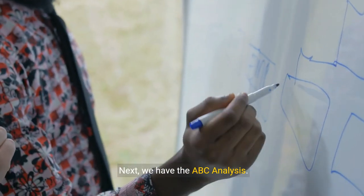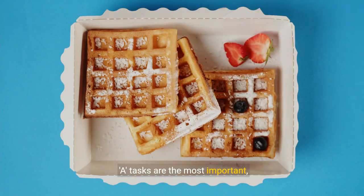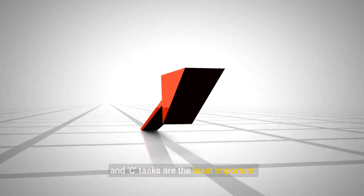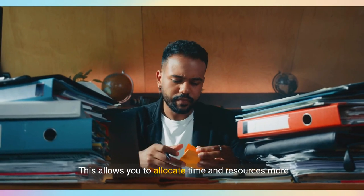Next, we have the ABC analysis. This technique categorizes tasks into three groups: A tasks are the most important, B tasks are important but not as critical, and C tasks are the least important. This allows you to allocate time and resources more efficiently.